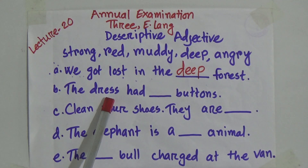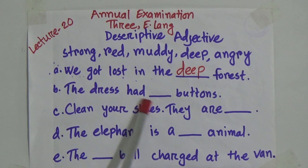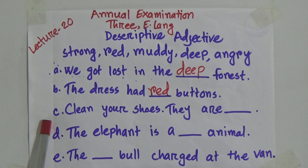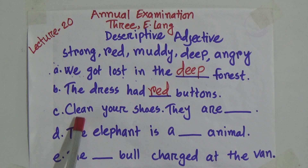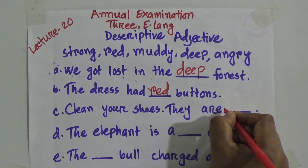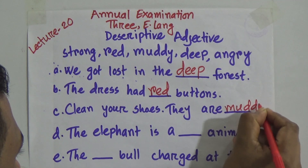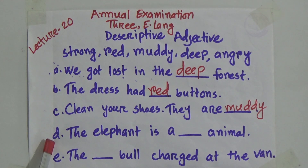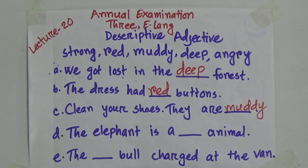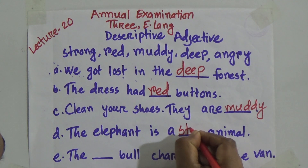Number B: that race had gap buttons. That race had what kind of buttons? That race had red buttons. Number C: clean your shoes — they are gap. You have to clean your shoes because they are what? They can be muddy. Number D: the elephant is a gap animal — what kind of animal? A strong animal. The elephant should be a strong animal.